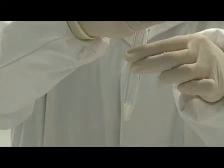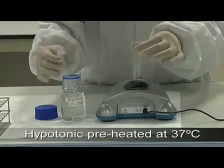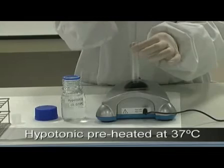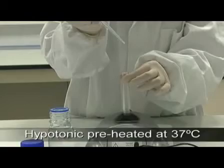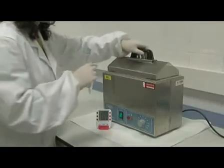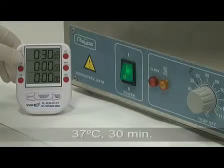Now, gently remove the supernatant. And add the hypertonic solution drop by drop until you have a volume of about 10 millilitres. This tube must remain at 37 degrees C for 30 minutes.